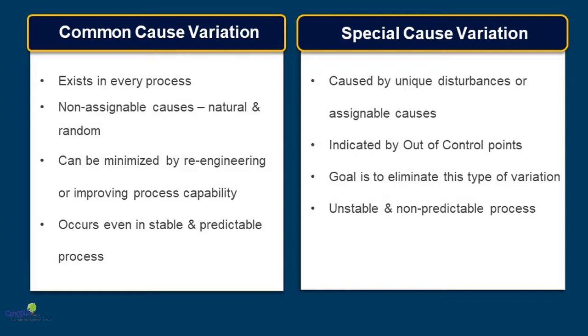But if your process has special cause variations, then it means that these variations are not natural to the process. As a result, you can easily identify an assignable reason and eliminate that particular cause. Special cause variation makes your process unstable and non-predictable over a period of time.